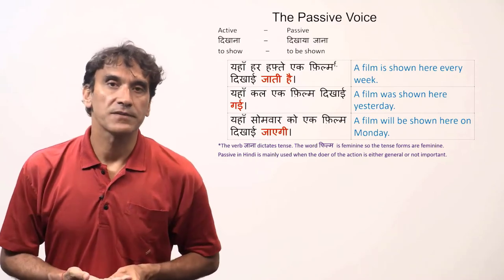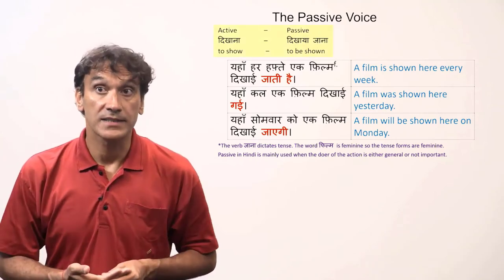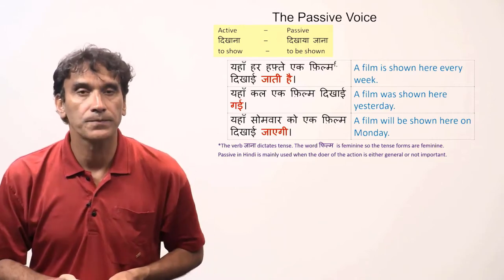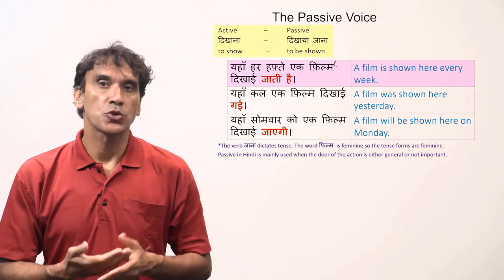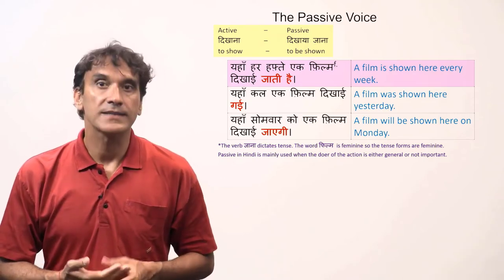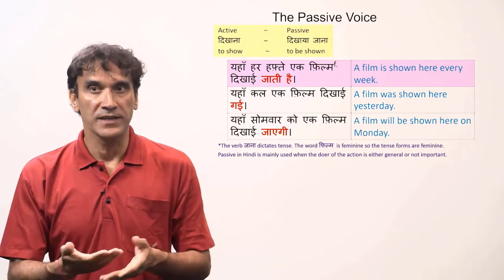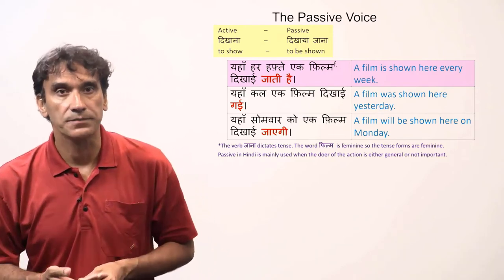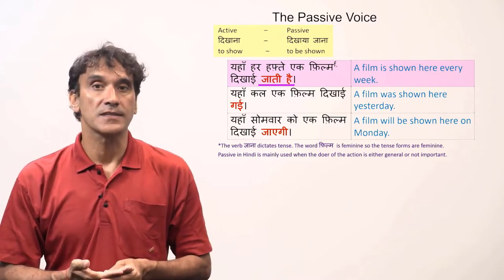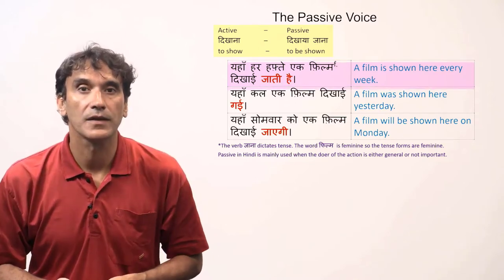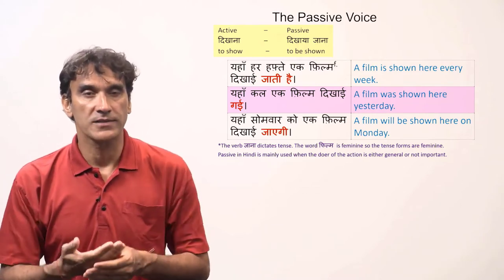Let's take some examples with the verb 'dikhana,' meaning to show. The passive form of 'dikhana' is 'dikhaya jana.' 'A film is shown here every week' — this sentence is in present habitual tense, and the noun 'film' is feminine, so it becomes 'dikhaye jati hai.' The verb 'jana' in 'dikhaya jana' follows the tense, number, and gender.